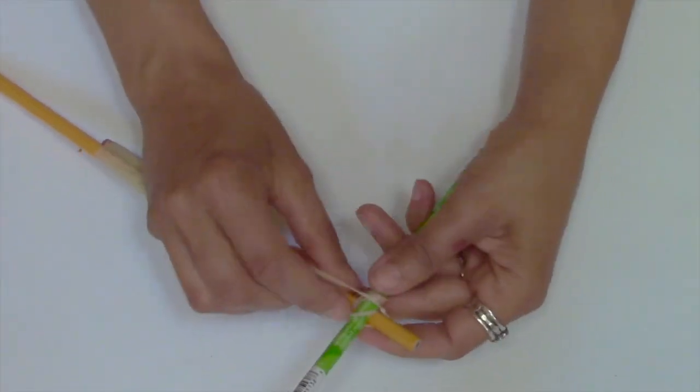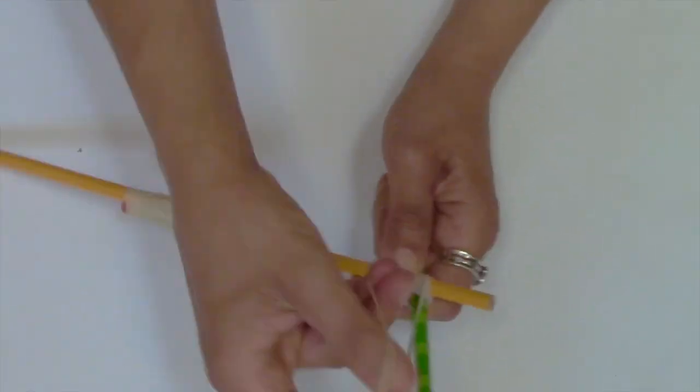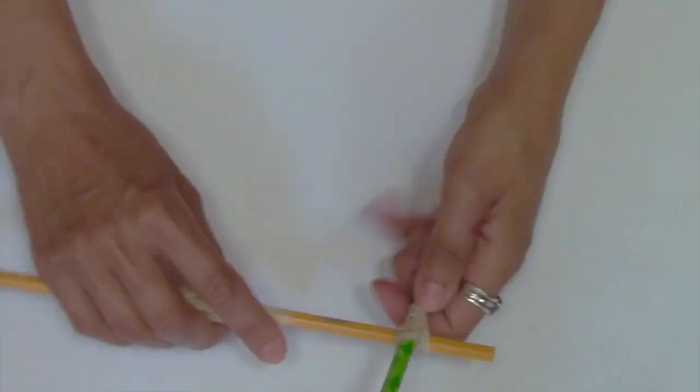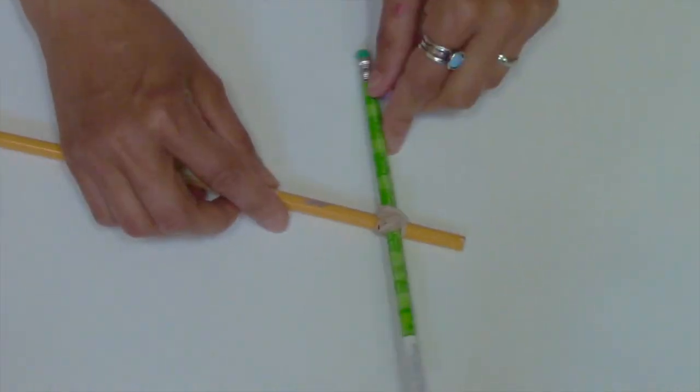I'm using two rubber bands to secure the bottom pencil. The first is diagonally in one direction. Then I flip the throwing arm over and add the other one diagonally opposite. I'll add two pieces of tape in the same diagonal pattern.